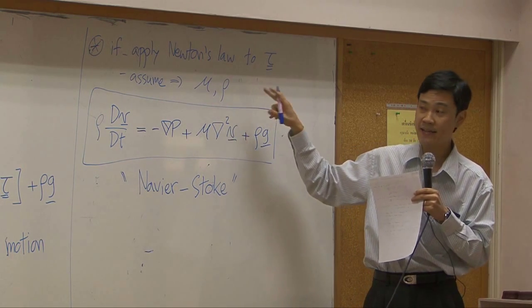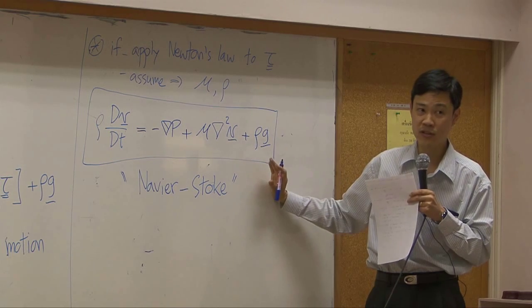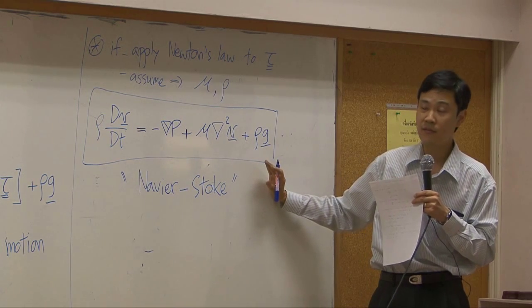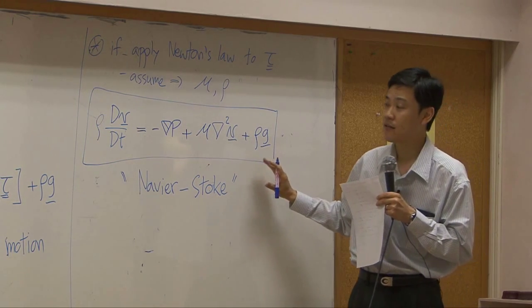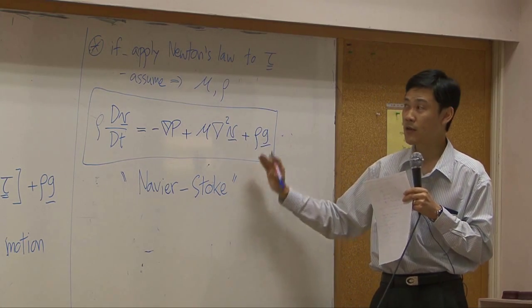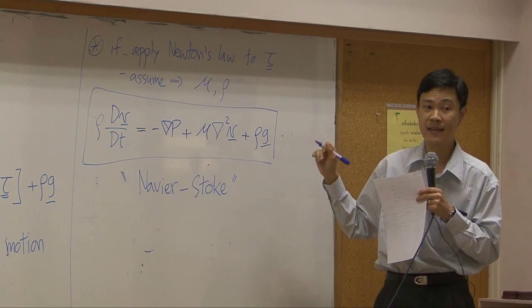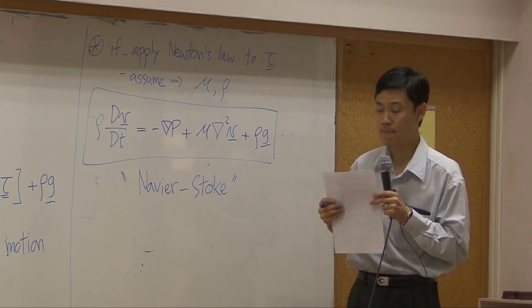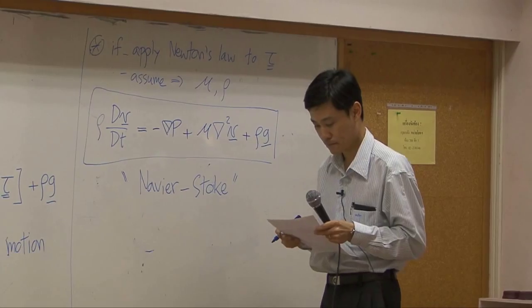Okay, so in that case you cannot use Navier-Stokes equation. Basically, mostly Navier-Stokes equation will be used for liquid flow because liquid can be assumed to be constant density. All right?